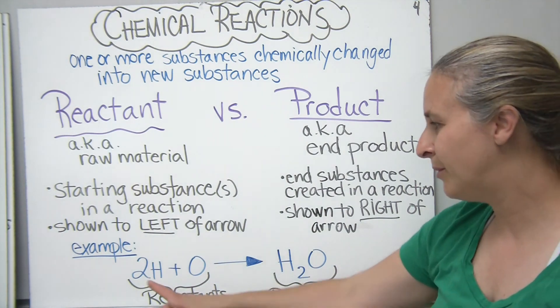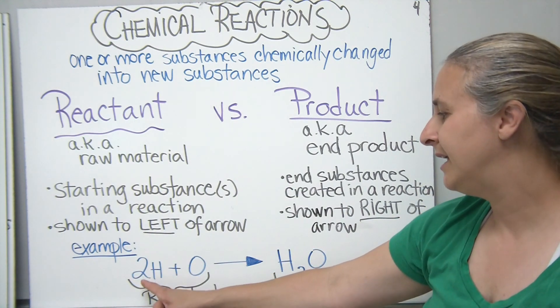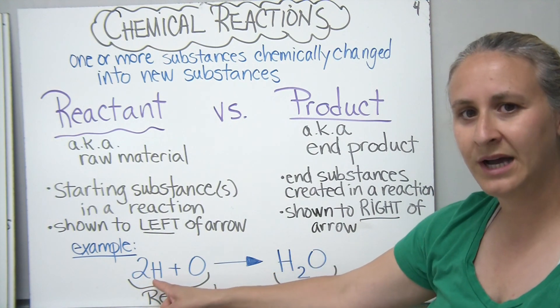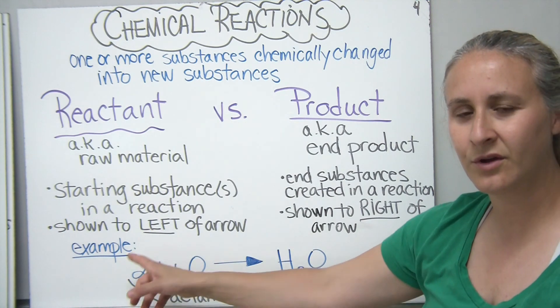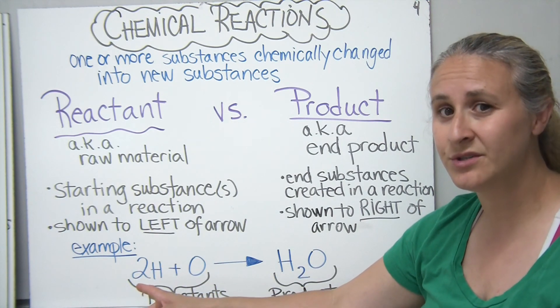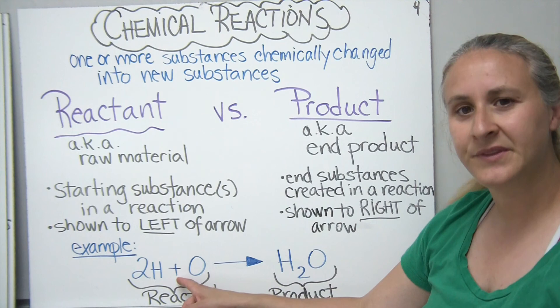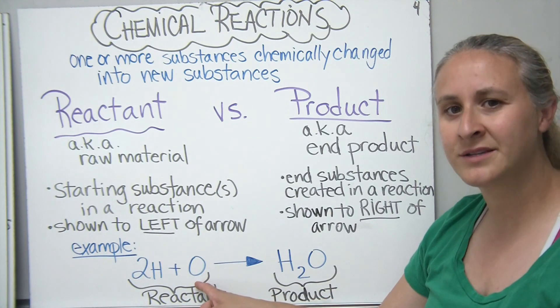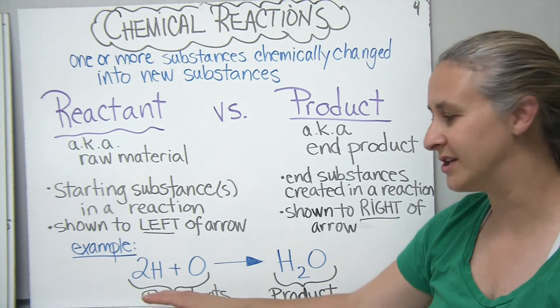So we have an example reaction that I'd like you guys to write down. And it happens to be two hydrogen, and this is called a coefficient. It means that we're taking two hydrogen atoms, adding to one oxygen atom.